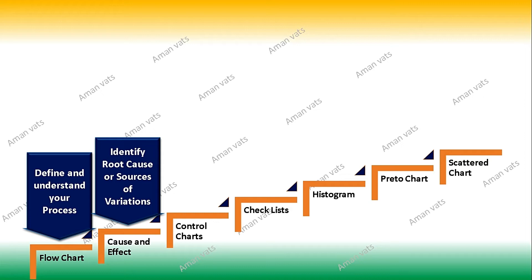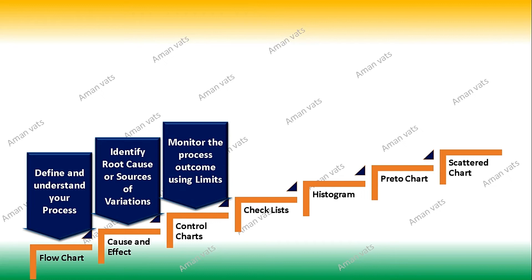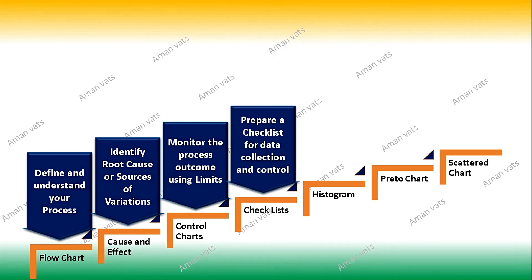The cause and effect diagram has multiple names, which I will cover in detail when I go in depth for that particular tool. The third one is the control chart, which is used for monitoring your process — how your process is working and what the outcome is, using limits. You may have heard values like UCL and LCL, which I'll cover in my video on control charts. Next, the checklist is for data collection and control.